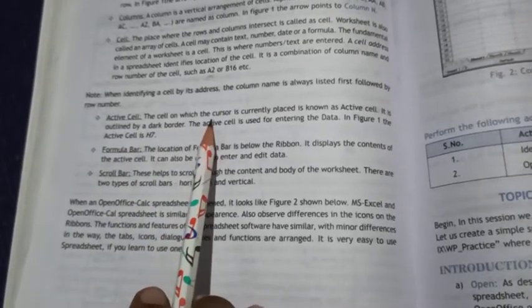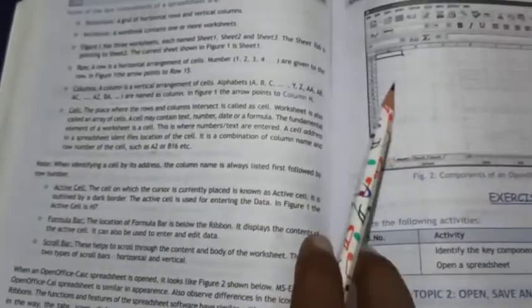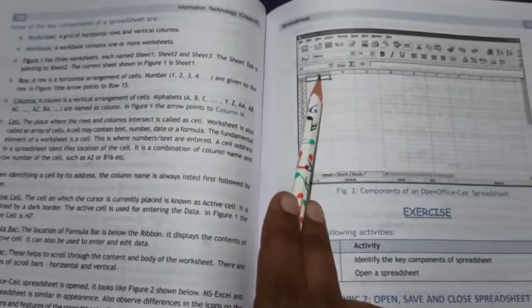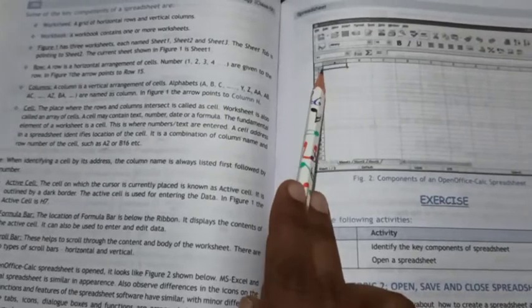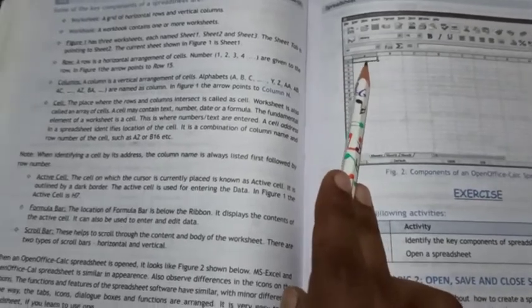Active Cell: The cell on which the cursor is currently placed is known as the active cell. In this figure, the A1 cell is the active cell, which is bordered with a dark black box.